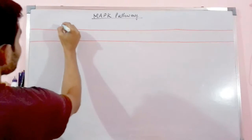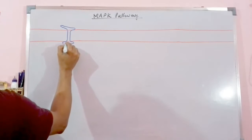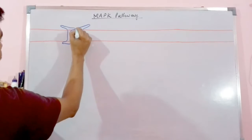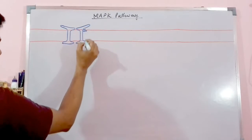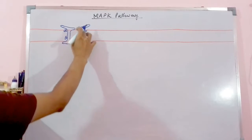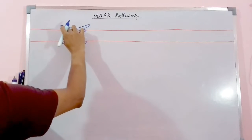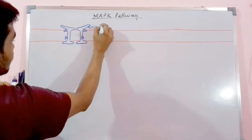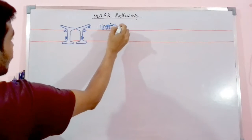This MAP kinase pathway initiates with the receptor of tyrosine kinase particularly. Let me draw the tyrosine kinase receptor here. This is what a tyrosine kinase receptor looks like. Here lies the alpha domain and here lies the beta domain — similarly on both sides. The transmembrane part is the beta and this part is the alpha.